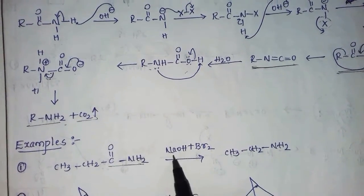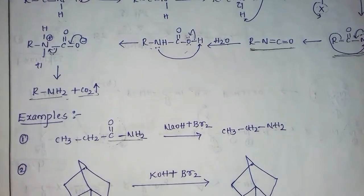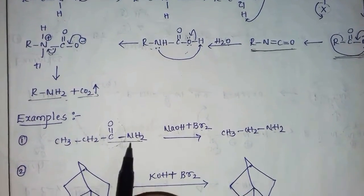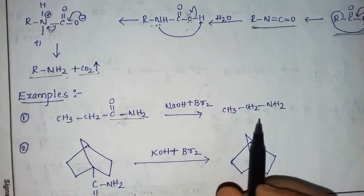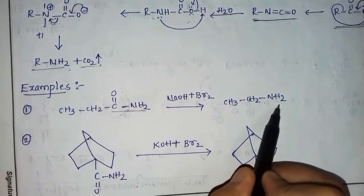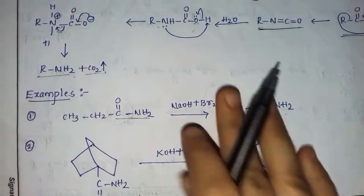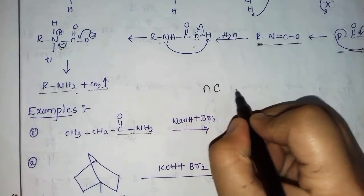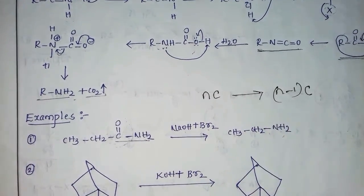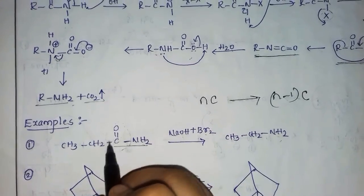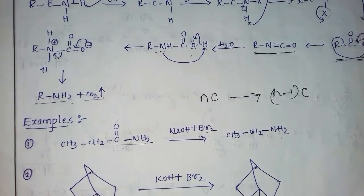Examples: this is a primary amide — with base we remove this group. A small trick to remember is that these reactions follow an n to n-1 carbon rule, meaning we remove one carbon (as CO2) and get the primary amine product. The same mechanism applies to all examples in Hofmann rearrangement.